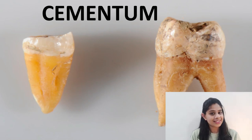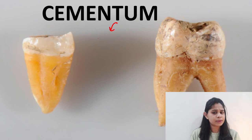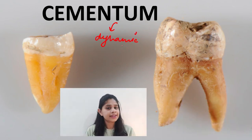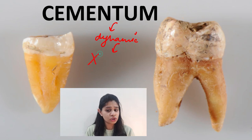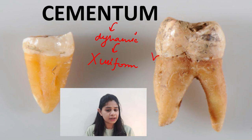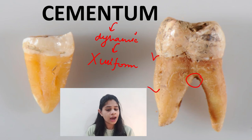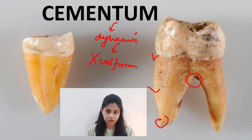In the previous broadcast we discussed that cementum is a dynamic tissue, which basically means that the cementum tissue is not uniform throughout the root. The composition of the cementum keeps varying based upon the location — in the coronal aspect it is different, in the middle third it's different, in the cervical and furcation areas it's different, and at the apex the tissue composition is also different.